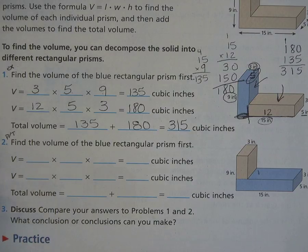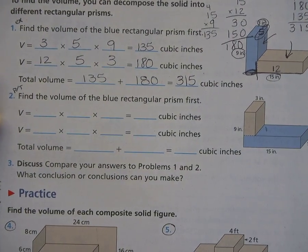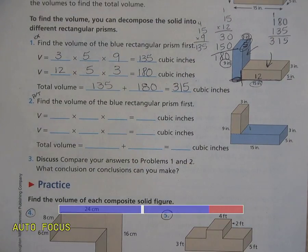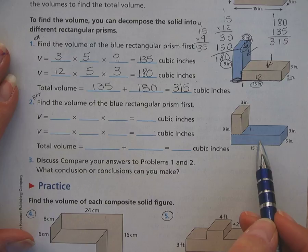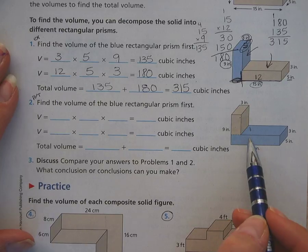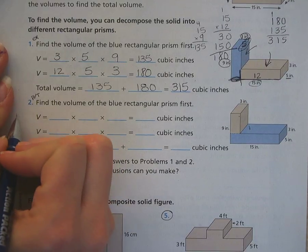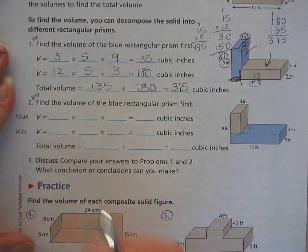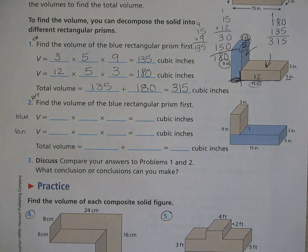Alright, so the next one is a pause and try it. So please take a look at number two. It's actually the same one, isn't it? Only this time, it's got the tan and the blue different. Yep, it's broken up differently. So try and find the volume of the blue, the volume of the tan, and the total, and then come back and we will go through it and see if you figured out all the dimensions correctly.